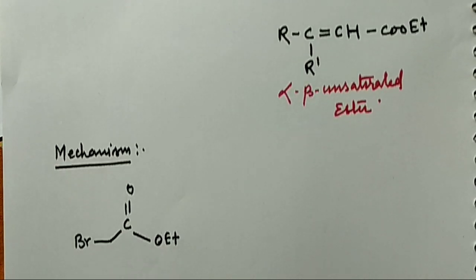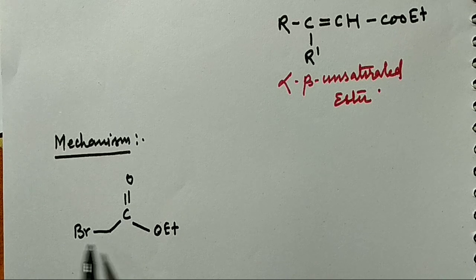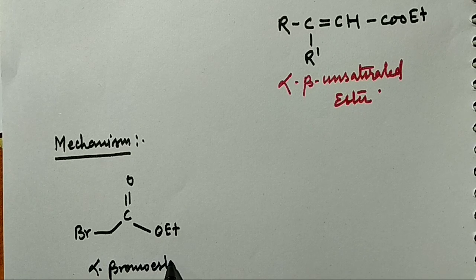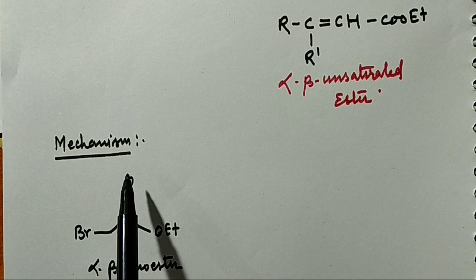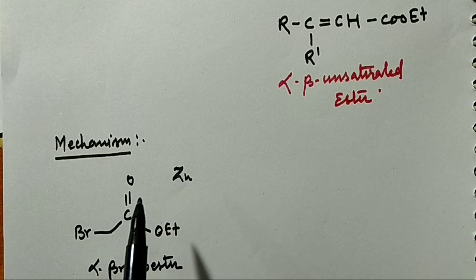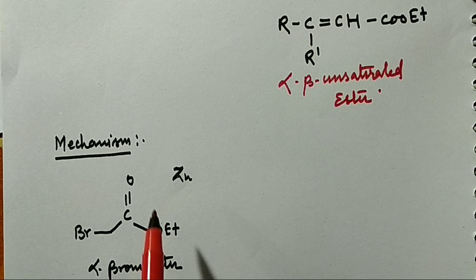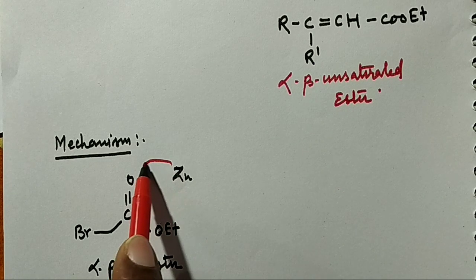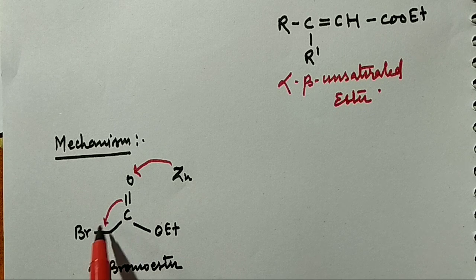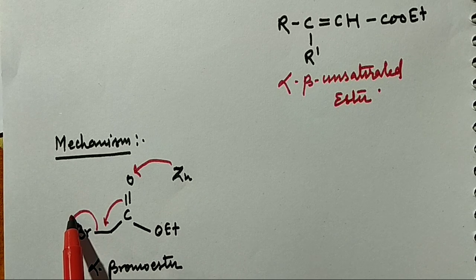We can observe: this is the alpha-bromoester, this is the carbonyl carbon, and this is the oxygen. This oxygen has a lone pair of electrons. So zinc attacks on the lone pair of electrons on the oxygen, this bond is broken, and the bromine is removed.